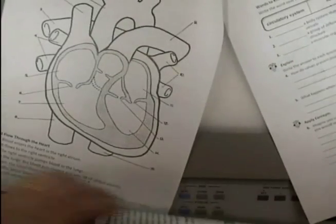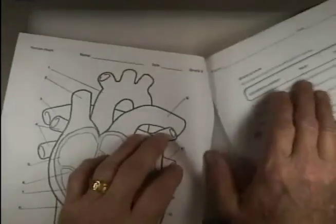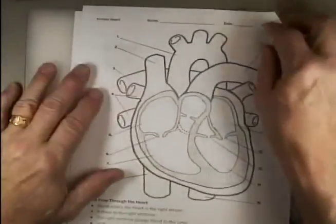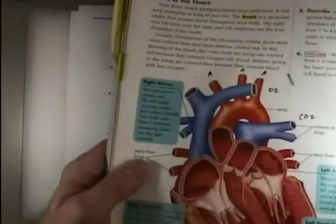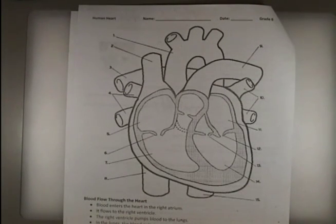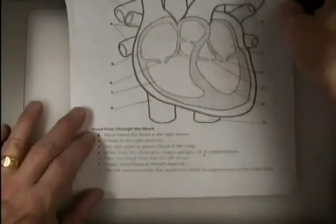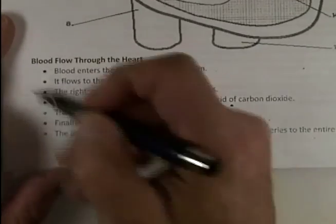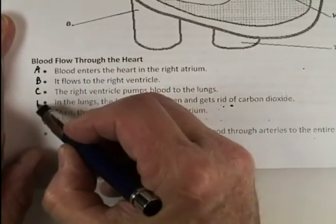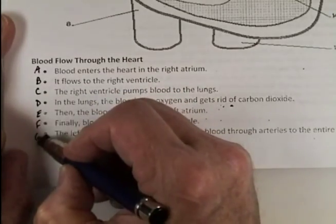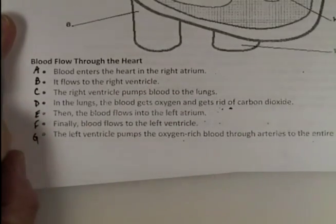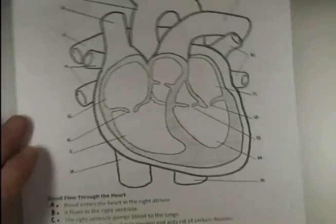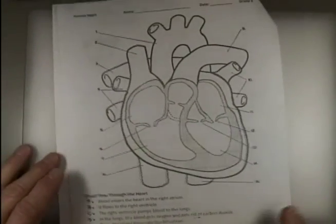On the second page of our worksheet I've made a diagram of the human heart. It seems complicated, but with the help of our book and model we should be fine. At the bottom are the different blood flow steps through the heart. I'd like us to letter these right now: A, B, C, D, E, F, and G — so we can follow the blood through.